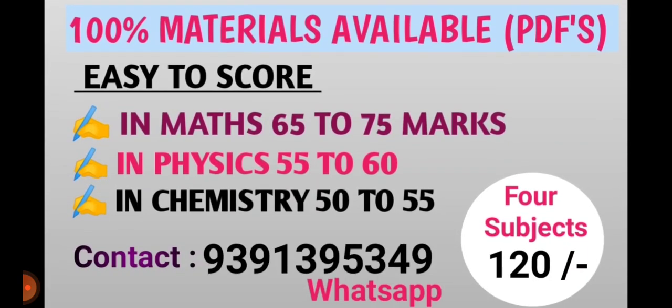With these materials, in Maths you can score 65 to 75 easily. Physics 1st year — 55 to 60 score. Chemistry 1st year — 50 to 55 easy score. This applies to both 1st year and 2nd year. For 4 subjects, only 120 rupees.